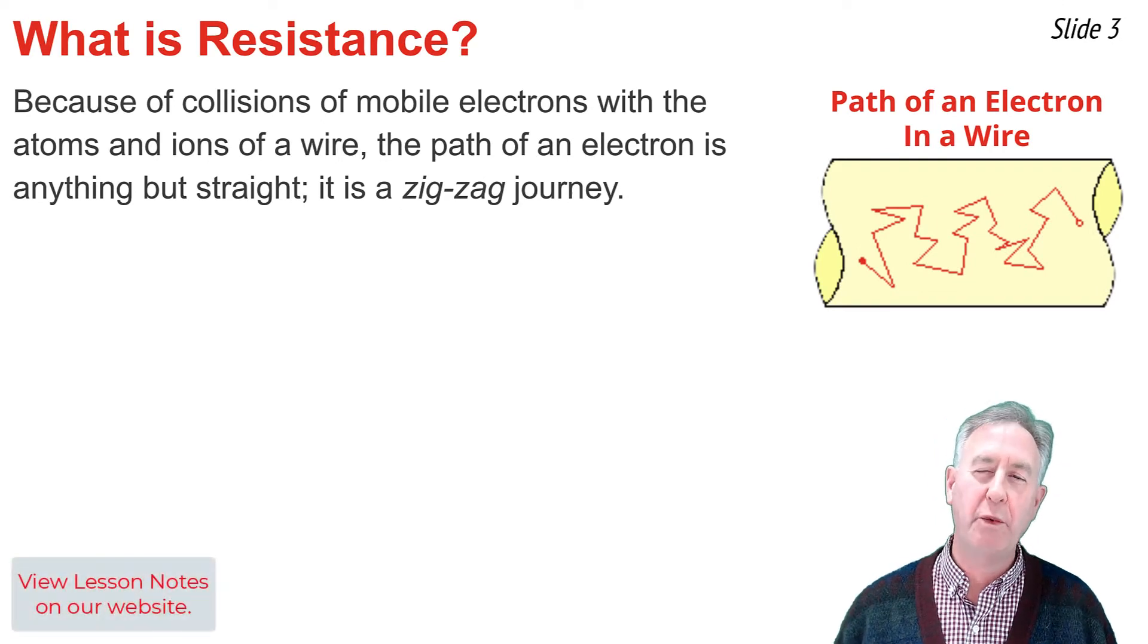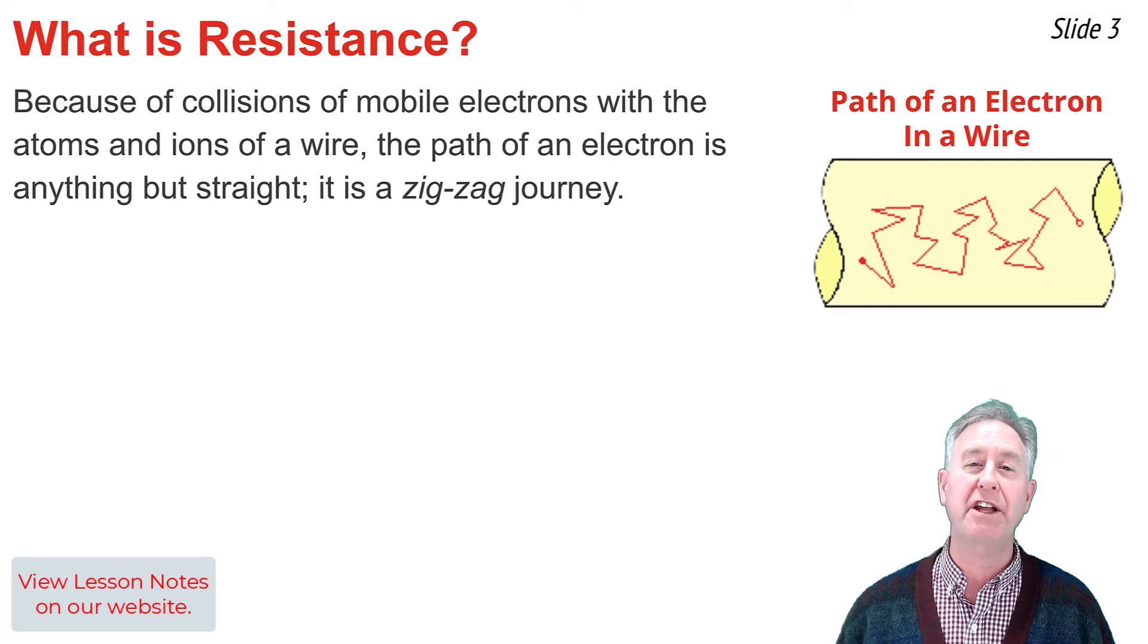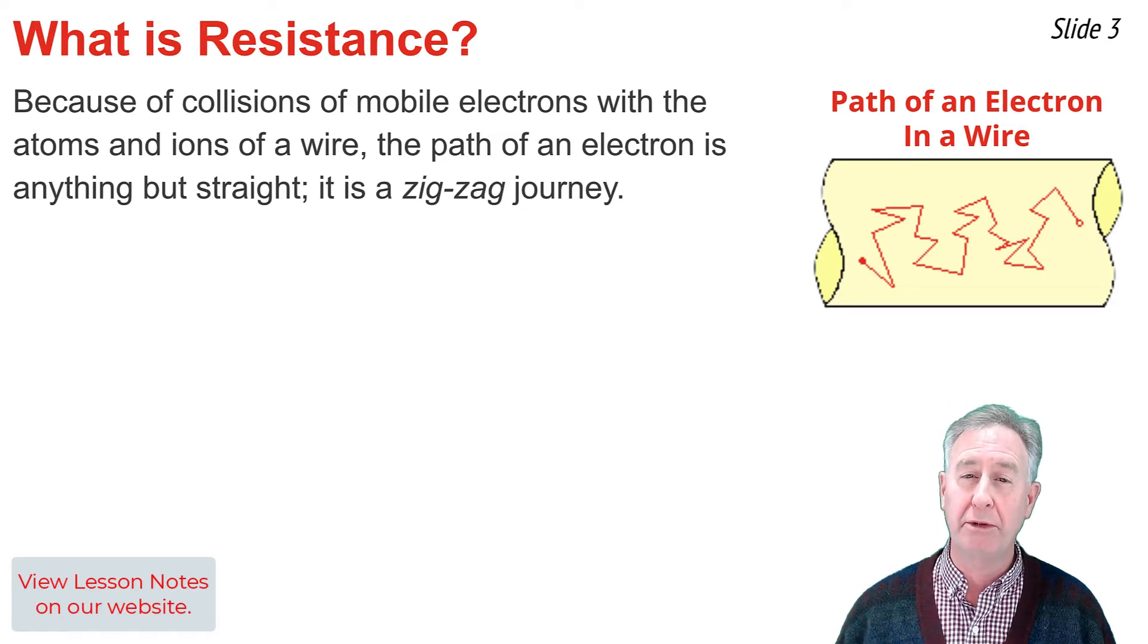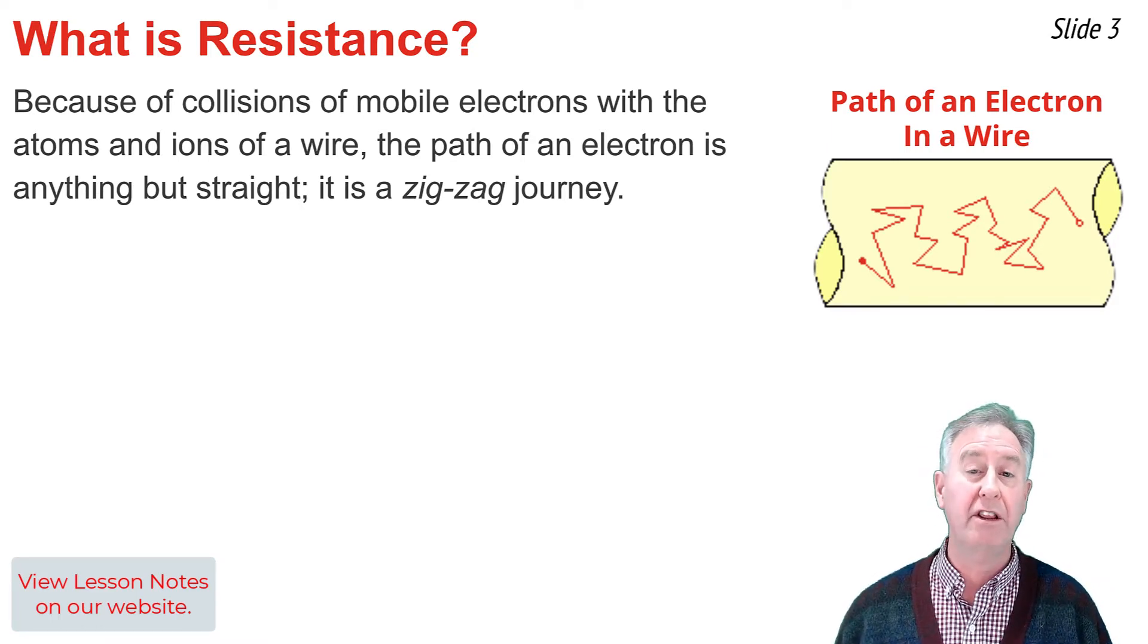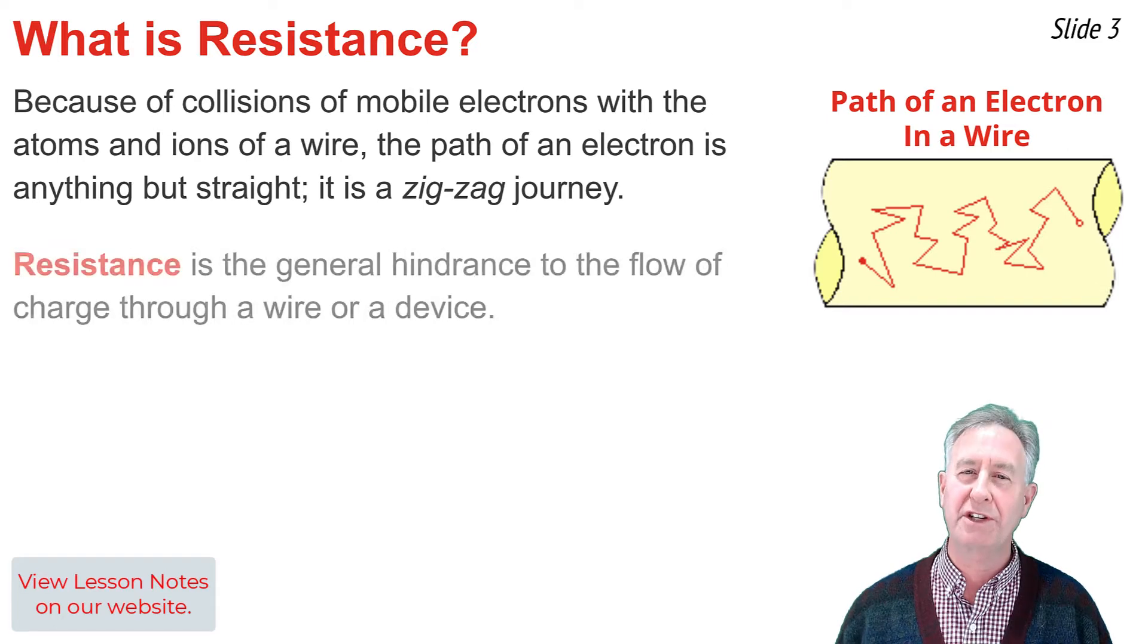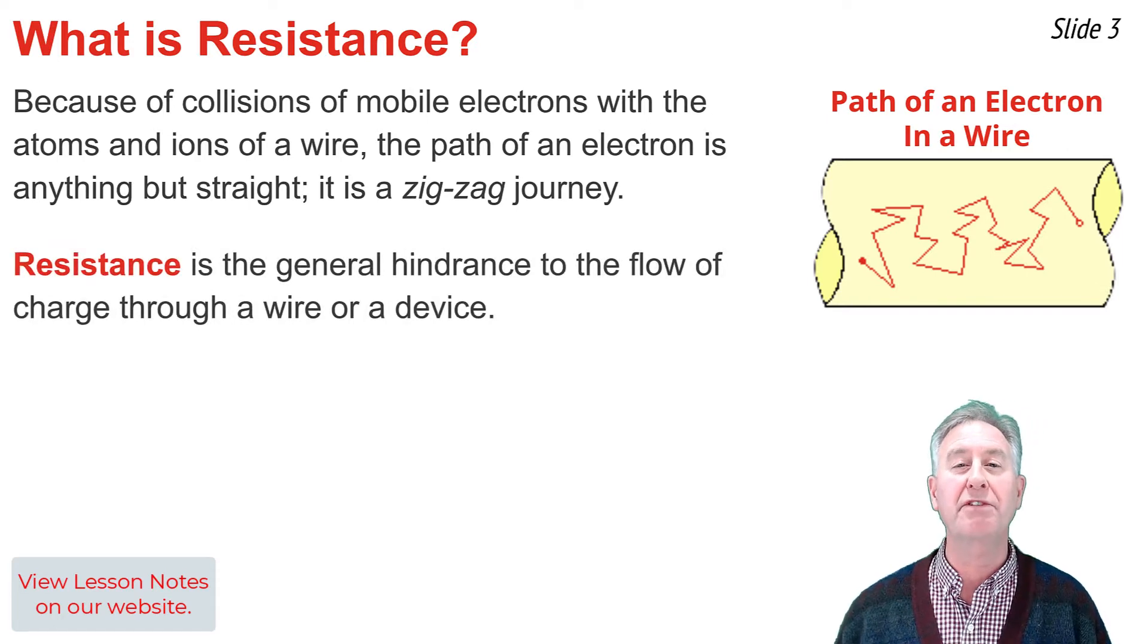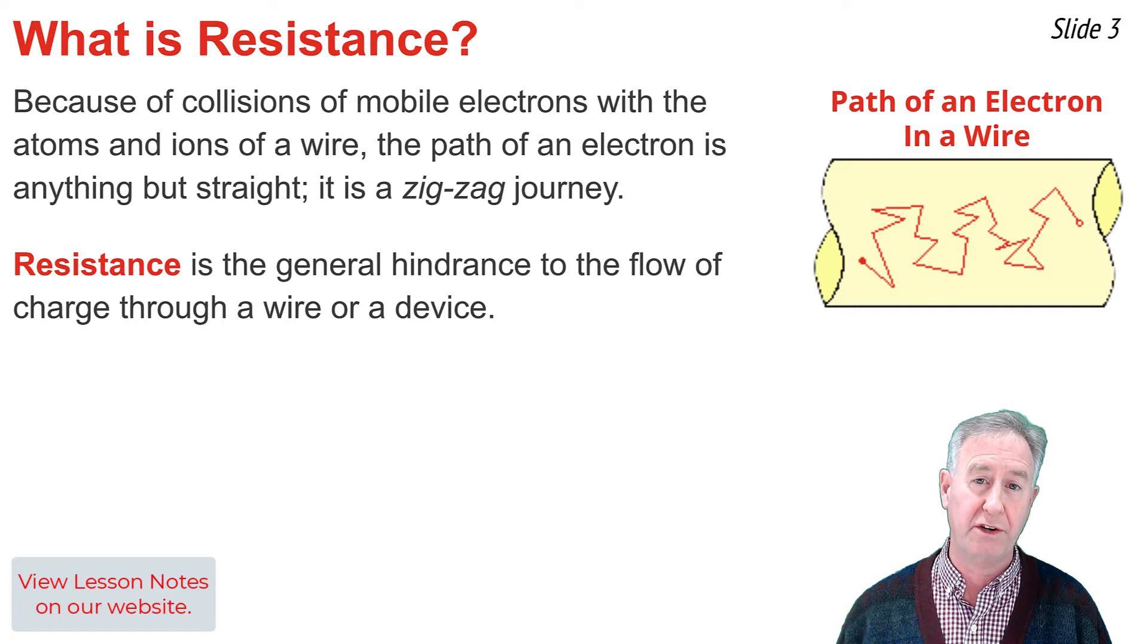The charge carriers within a wire of an electric circuit are mobile electrons. When I say mobile electrons, I'm referring to those electrons that have escaped the valence shell of the atoms of the wire. The path of these mobile electrons is anything but straight. Because of their collisions with the atoms and ions of the wire, they follow a more zigzag shape as shown. The collisions of mobile electrons with the atoms and ions of a wire leads to resistance. Resistance is the general hindrance to the flow of charge within a wire or a device on a circuit.